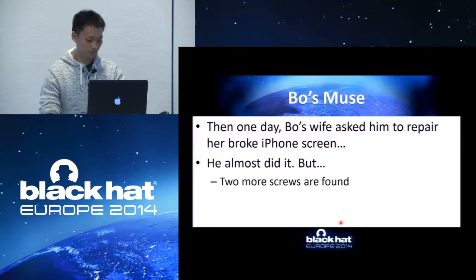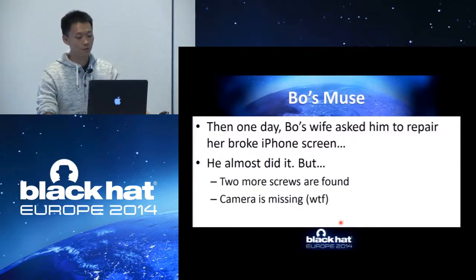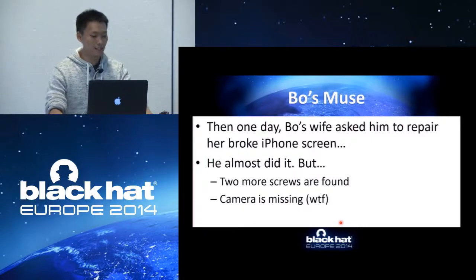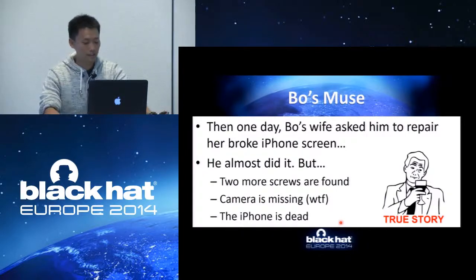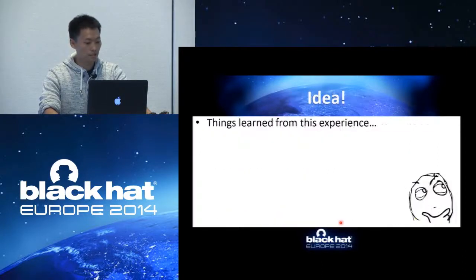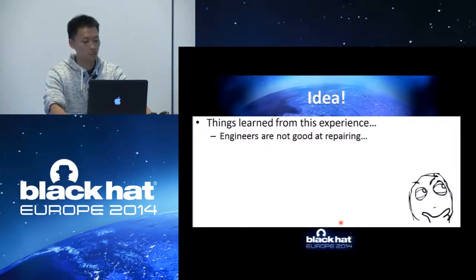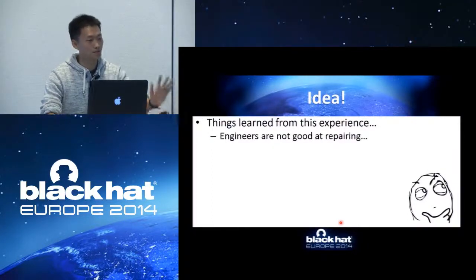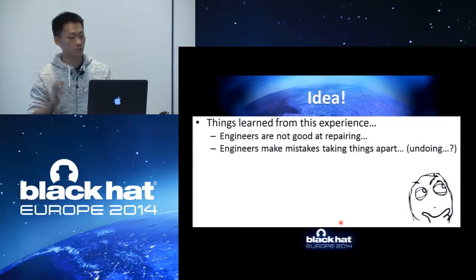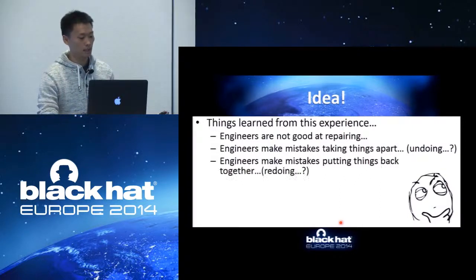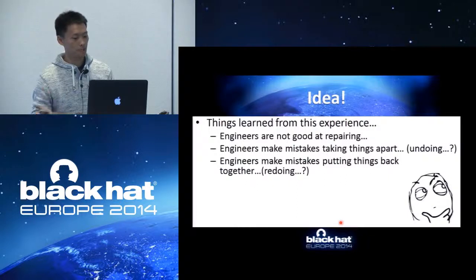We turned it around and found we could not find the camera — the camera was missing. And worst of all, the iPhone was dead; we couldn't turn it on. What we learned from this story: maybe engineers are not good at repairing things — just maybe — and maybe engineers make mistakes taking things apart, like undoing things, and maybe engineers make mistakes putting things back together, like redoing something.